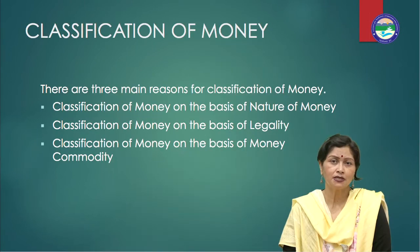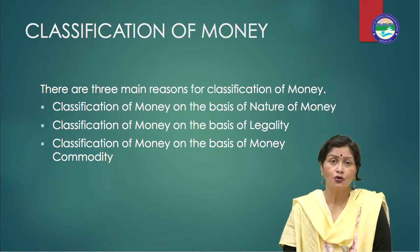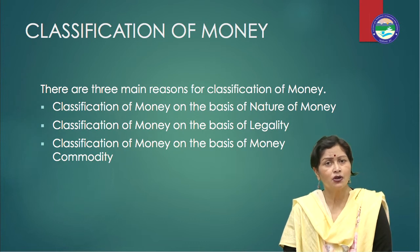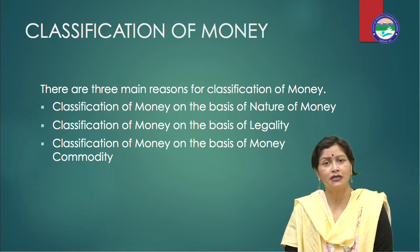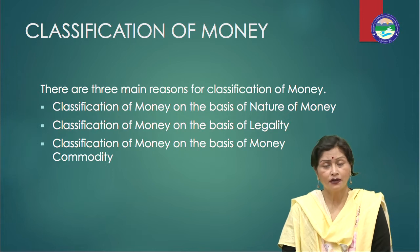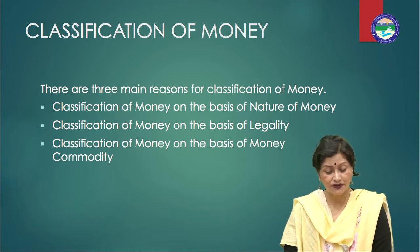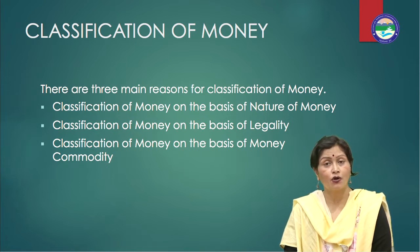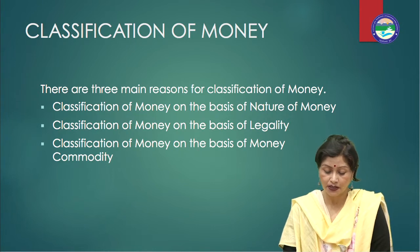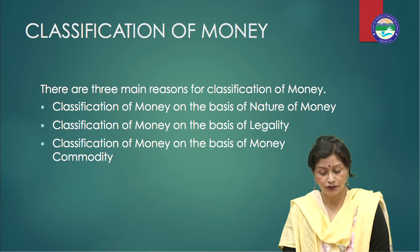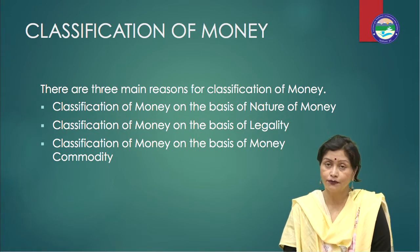Money assumes so many forms in real life that it is difficult to identify what constitutes money and what not. Different economists have classified money in different forms. There are three main reasons for the classification of money: number one, classification of money on the basis of nature of money; number two, classification of money on the basis of legality; number three, classification of money on the basis of money commodity.